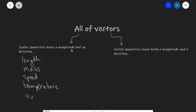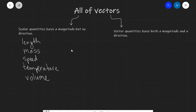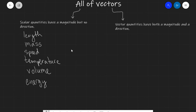How about volume? The volume is a directionless quantity. Energy as well is a scalar — it's just measured in joules, it has no direction whatsoever. The potential difference, which is the amount of energy per unit charge, is also a scalar quantity. And let's also include power — the energy per unit time — that is also a directionless quantity.